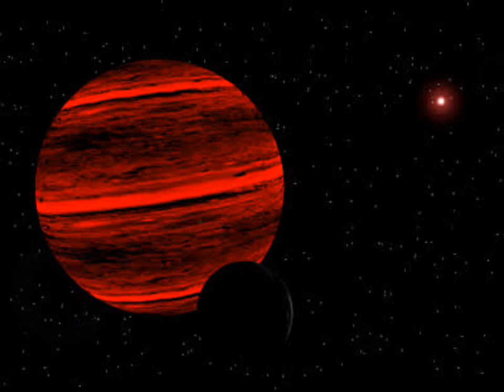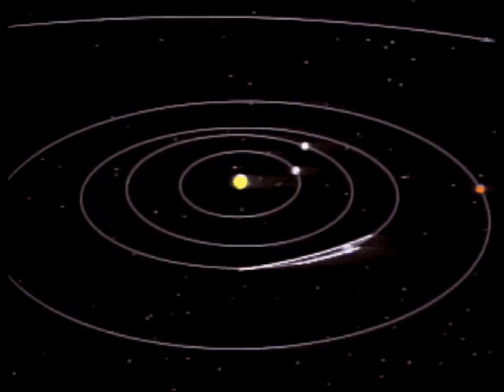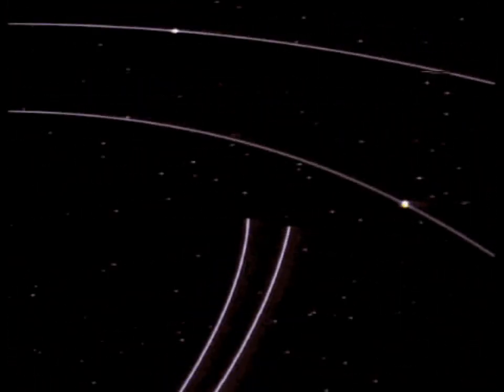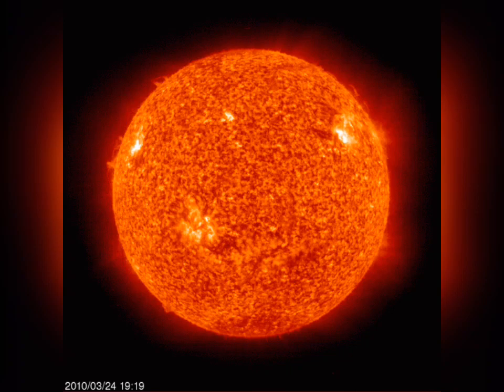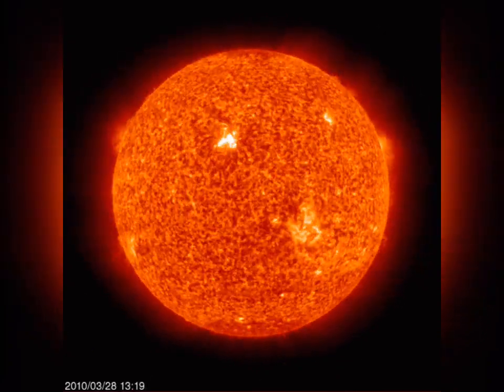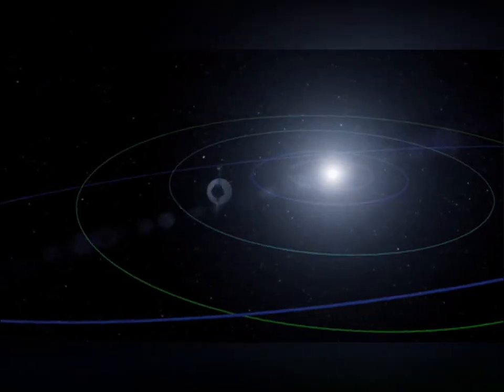Gliese 676 is a 10th magnitude wide binary system of red dwarfs that has an estimated minimum spacing of 8,000 AU with an orbital period greater than 20,000 years. It is located approximately 54 light years away in the constellation Ara.